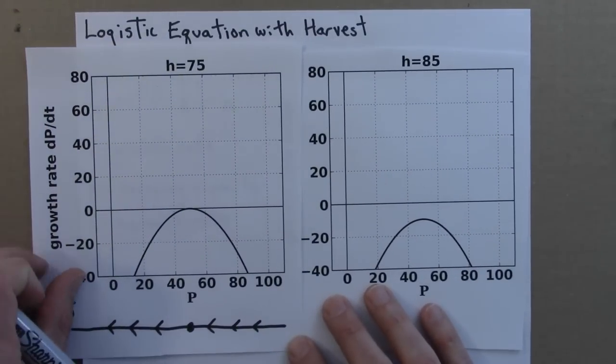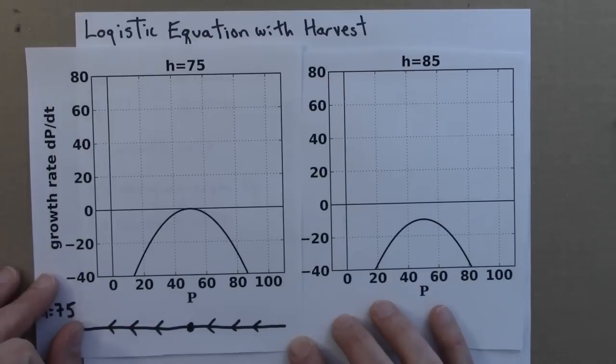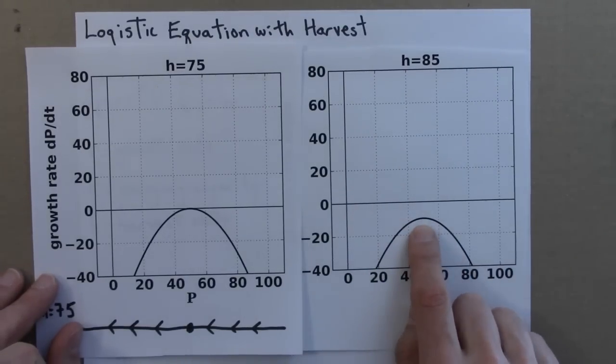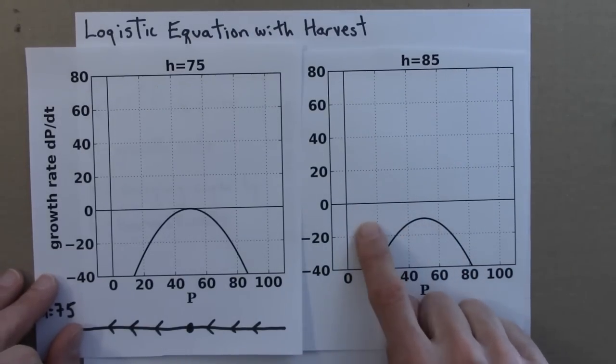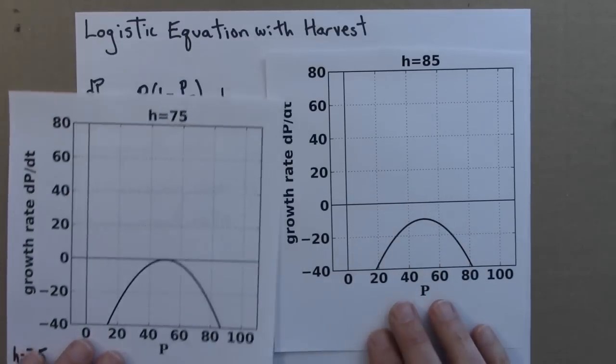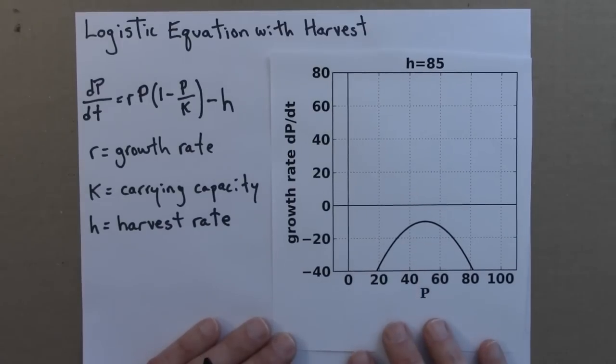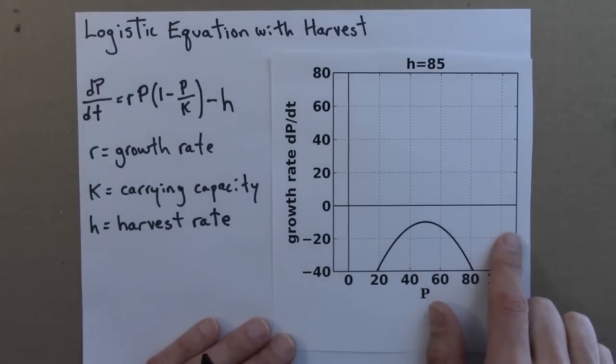Now h will be 85, so I'm harvesting 85 fish a year. And this is enough of a harvest rate that the parabola is now completely below the x-axis. That means that the growth rate is always negative. So no matter what the population is, it's decreasing towards zero, and I guess mathematically towards negative infinity. So this is really bad news for the fish.